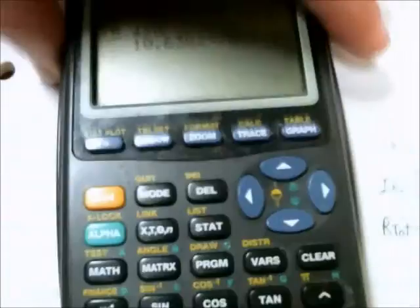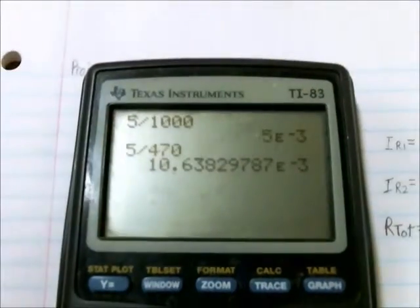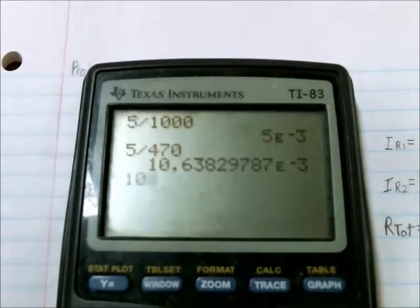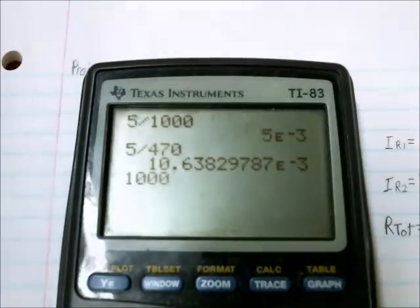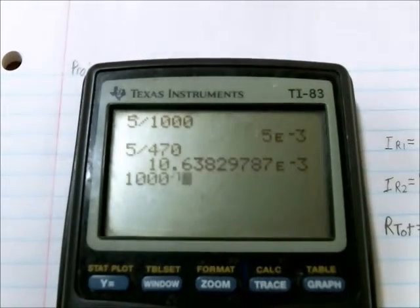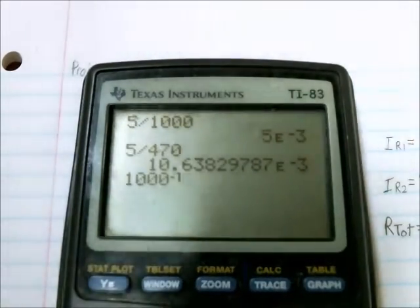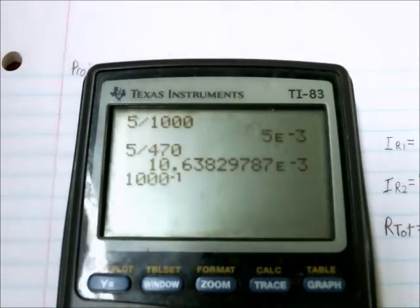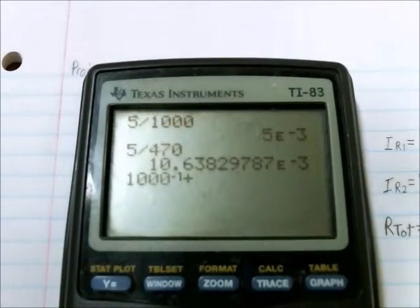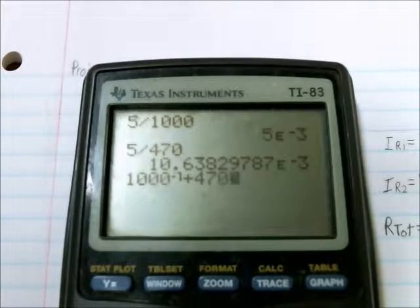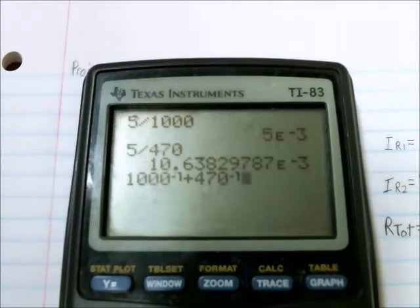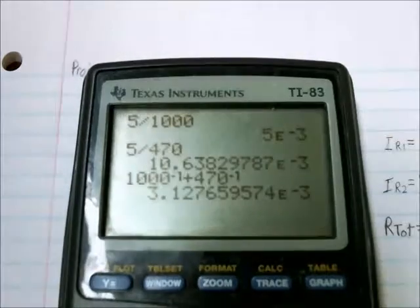And the way to do that on the calculator is this. So 1000 reciprocated, which is just 1 over 1000, plus 470 reciprocated. And now reciprocate that answer.